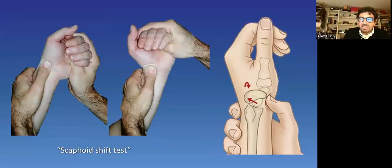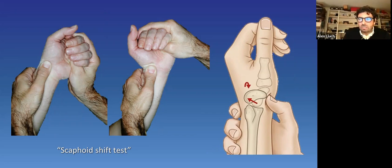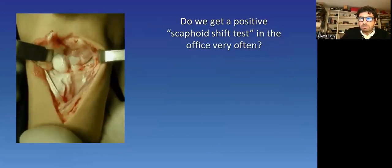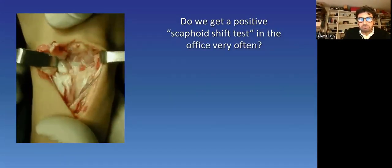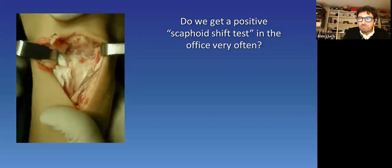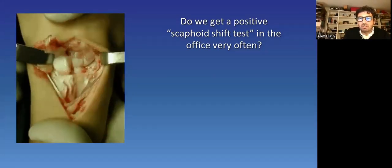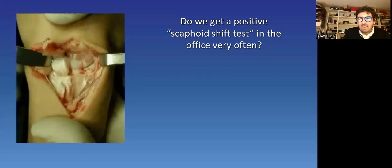The classical clinical test is, as you know, the scaphoid shift test that was described by Watson. The explorer's thumb does not allow scaphoid flexion when bringing the wrist into radial inclination. And can create a dorsal painful displacement of the scaphoid proximal pole in cases of scapholunate instability. More or less, we try to induce what you see on the video. But don't be frustrated if you don't get a positive test very often in the office. I don't get it either.